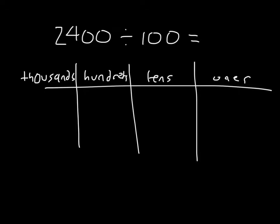Here we have the problem 2,400 divided by 100. This time we'll go ahead and use a place value chart to model this problem. We'll look at 2,400 and place it into the place value chart using unit disks — there are 2 thousands and 4 hundreds.